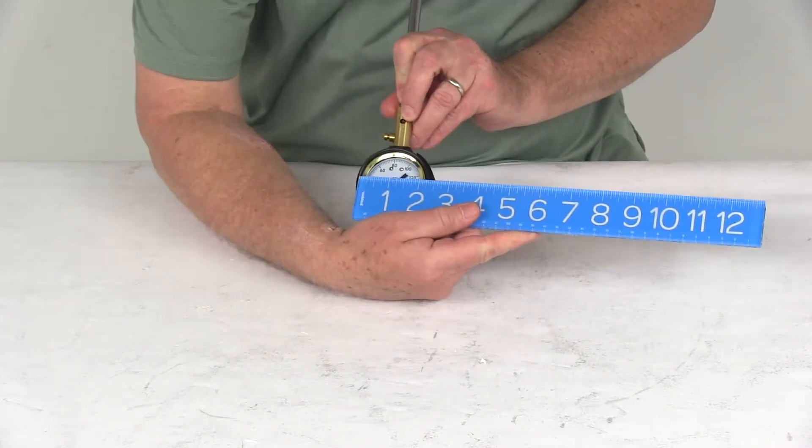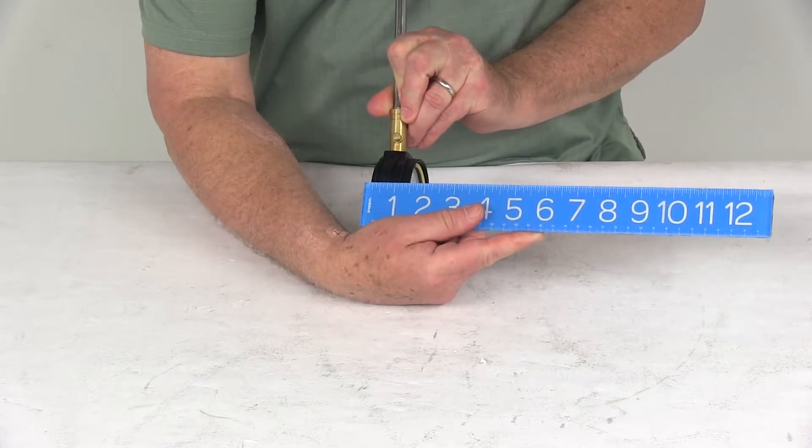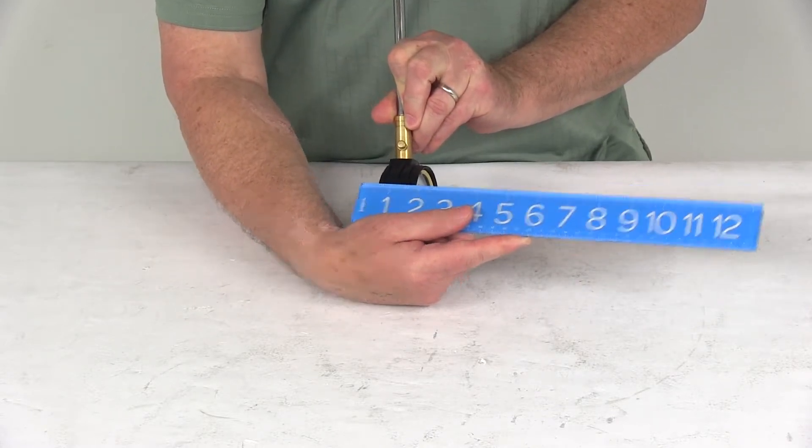On the gauge itself, the diameter is about 2 1⁄4 inches, and the depth is about 1 1⁄2 inches.